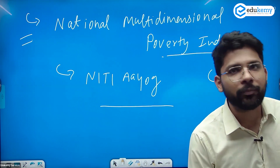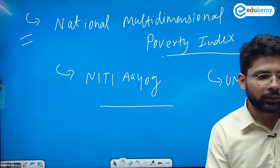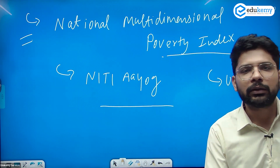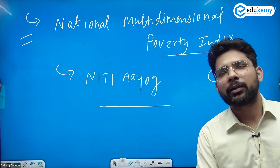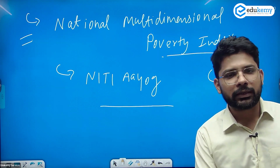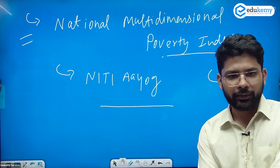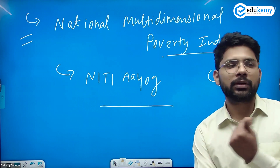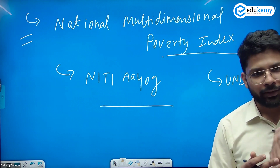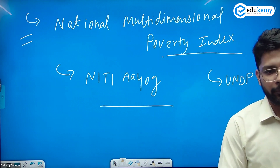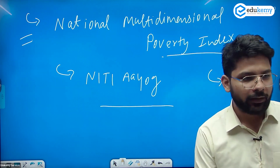The National MPI is important because NITI Aayog recently released a report related to the decrease in poverty in the country. They determined poverty status from 2005 to 2023, showing a continuous decrease in poverty levels in India. Their focus was on two types of poverty.